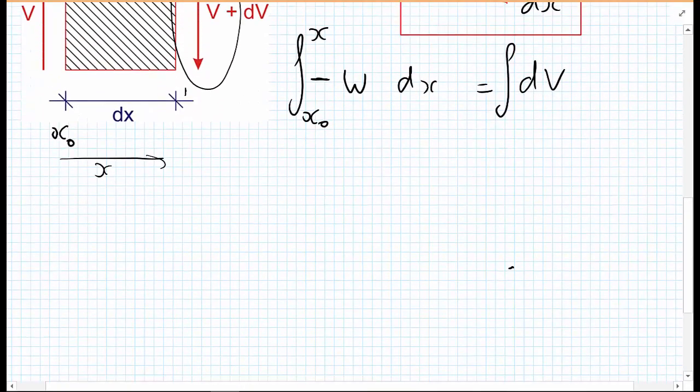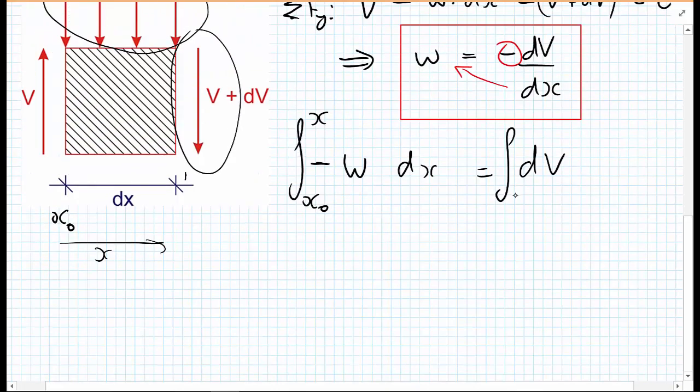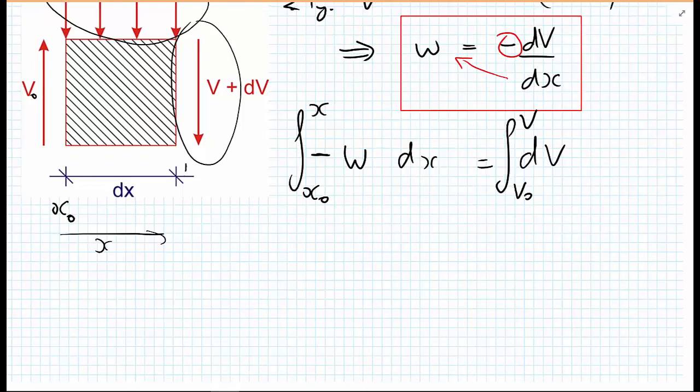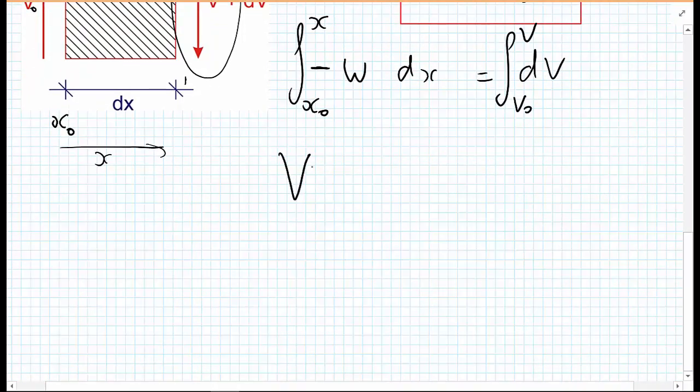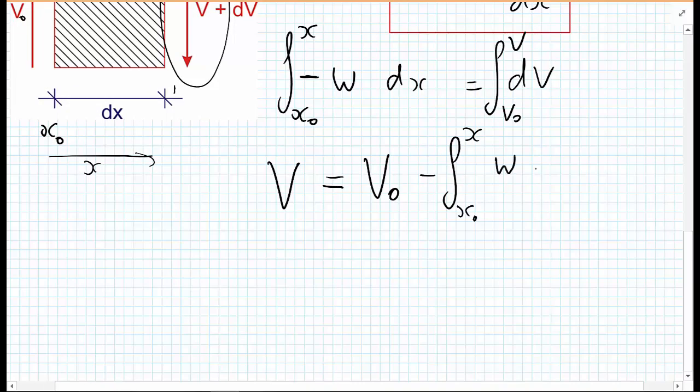And on the right-hand side, we have V0. So I'm taking V0 to be the existing shear force at some point that I'm considering, and to V at the point where I stop my integration. And we're going to evaluate these integrals. And we get that the shear force at some point away from V0 is equal to V0 minus the integral between X0 and X of w DX.